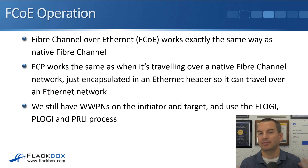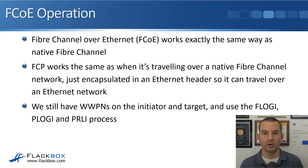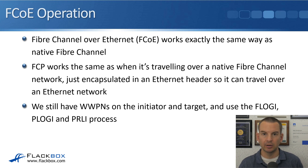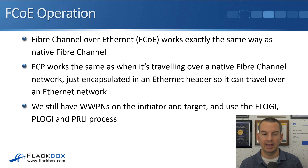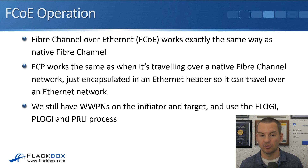Fibre Channel over Ethernet, FCoE, works exactly the same way as native Fibre Channel because it's using the same protocol underneath — FCP. And FCP works the same whether it's traveling over a native Fibre Channel network or over an Ethernet network using FCoE. We just add an Ethernet header outside the FCP information to allow the traffic to go over an Ethernet network. We still have the WWPNs on the initiator and the target, and it still uses the FLOGI, the PLOGI, and the process login processes.